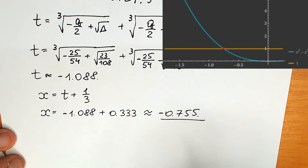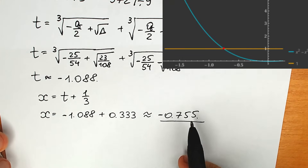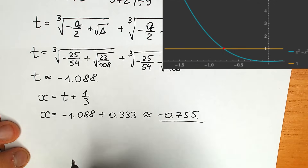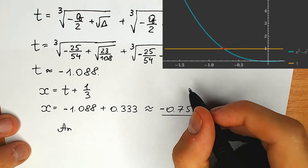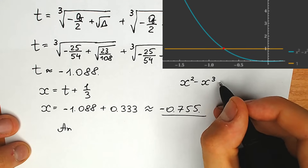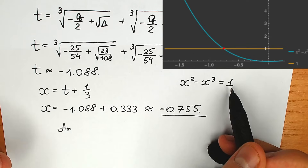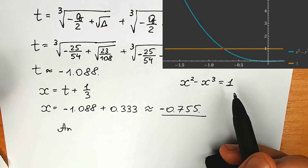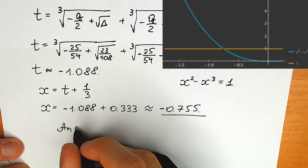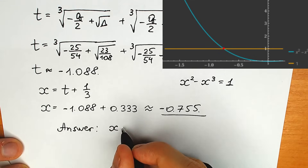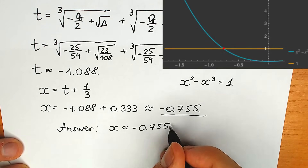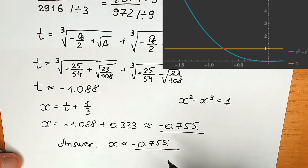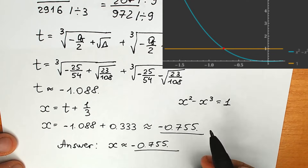You can see this point of intersection on the graph. You can easily check this answer in your calculator. When you plug in minus 0.755 instead of x, you will get the same answer. So our answer to this question is x approximately equal to minus 0.755.